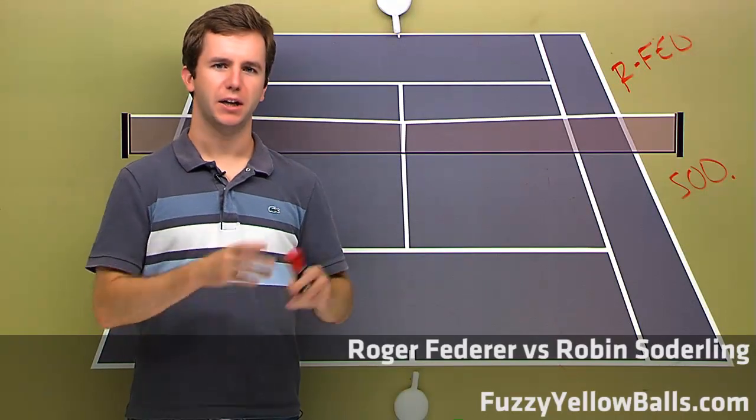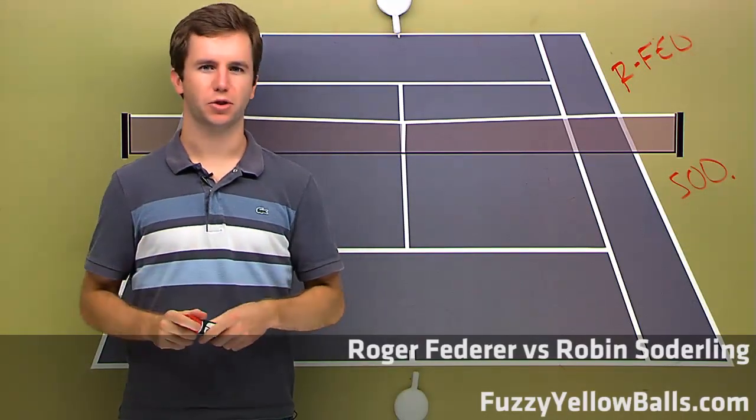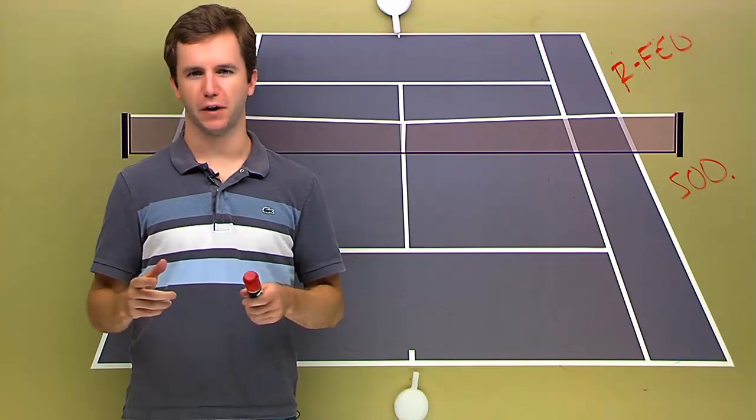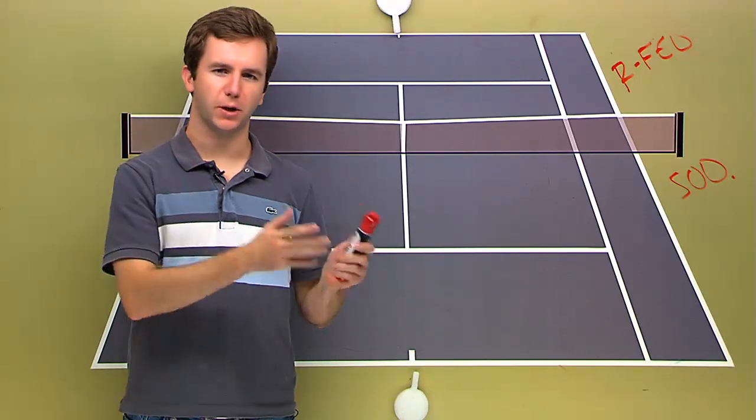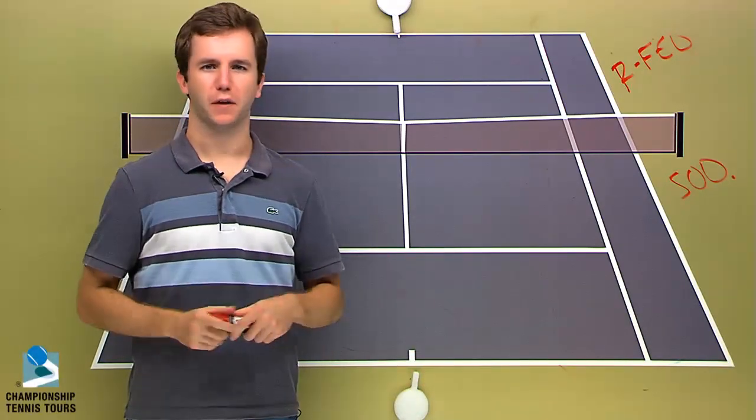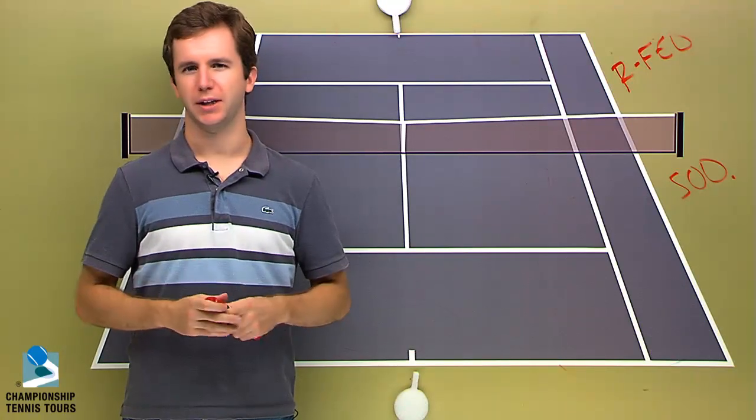In this video I'm going to talk about the Roger Federer, Robin Soderling quarterfinal match at the French Open. It is of course a rematch of last year's French Open final that Roger took in straight sets.